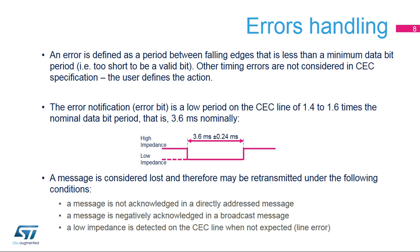A received data bit, excluding the start bit, is considered invalid if the period between the rising and falling edge exceeds the tolerance margins as defined by the HDMI CEC specification. In this case, a bit timing error, or BTE, is issued. Or, if the period between falling edges exceeds the tolerance margins, a bit period error, or BPE, is issued.